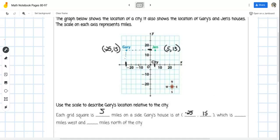Negative 25 and 15 on the coordinate grid. Which is, well, if we go west, it says which is blank miles west. West is this way. So from the city, this is 5, 10, 15, 20, 25 miles west. And going north, it's 5, 10, 15 miles north. So 25 miles west and 15 miles north.